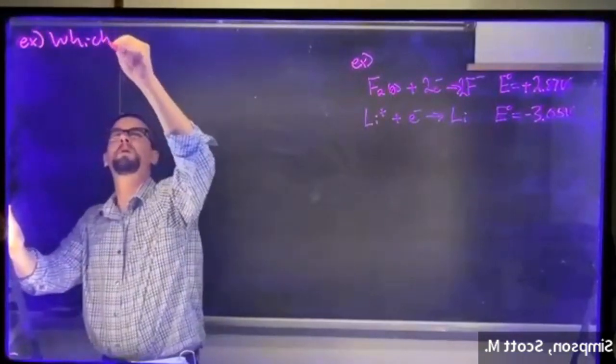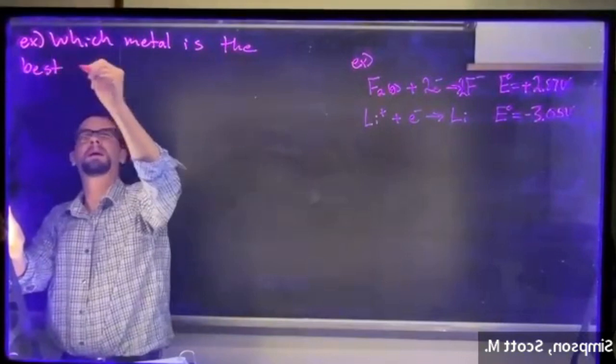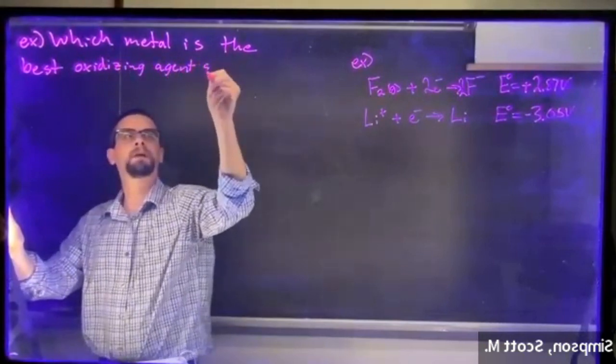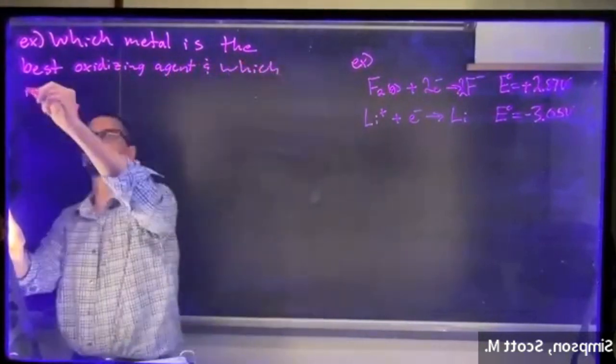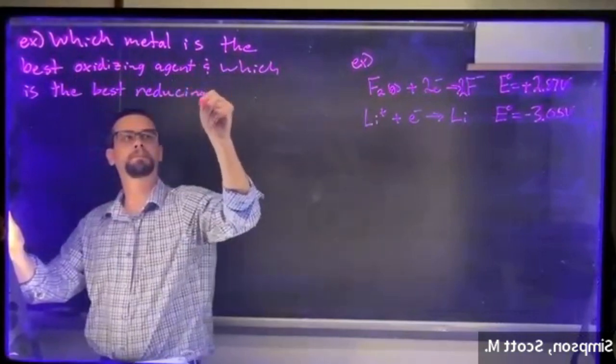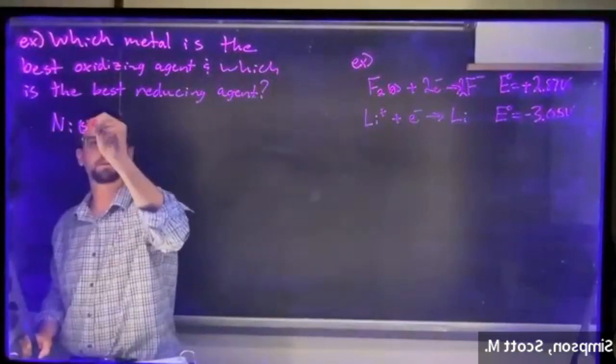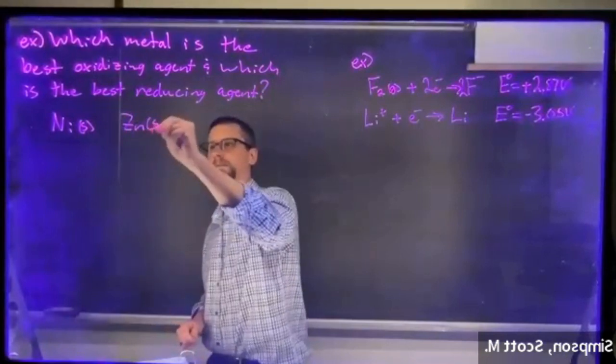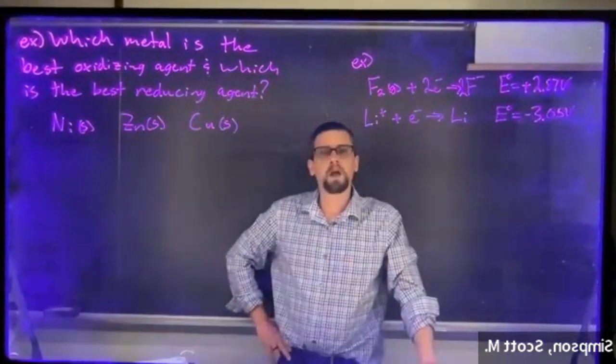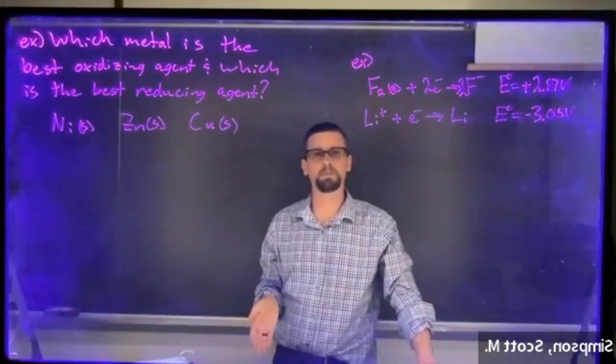We have nickel solid, we have zinc solid, and we have copper solid. So what we're going to do next is we're going to take a look at the standard reduction potentials of each of these different metals.